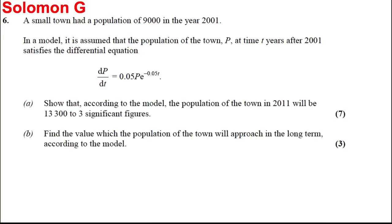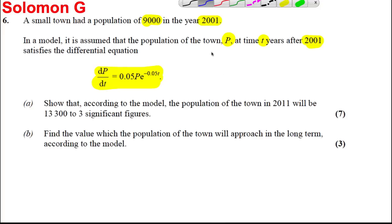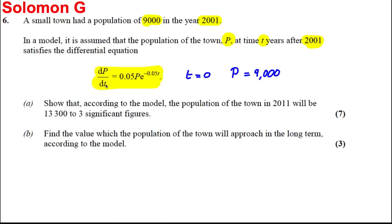Here's another differential equation question. We're told that we have a small town of population 9,000 in the year 2001. In the model it is assumed that the population of the town P, after T years after 2001, satisfies this differential equation. Our initial conditions: when T is equal to zero years after 2001, the population is equal to 9,000.